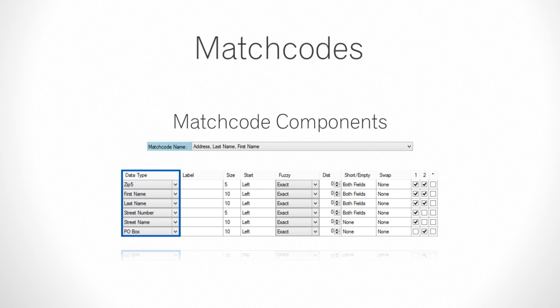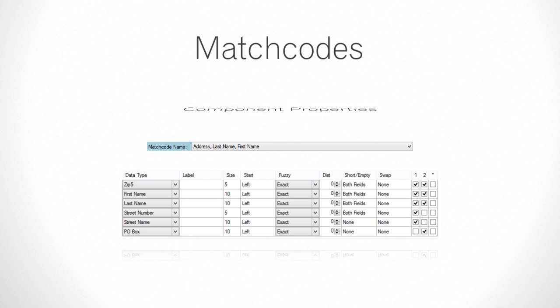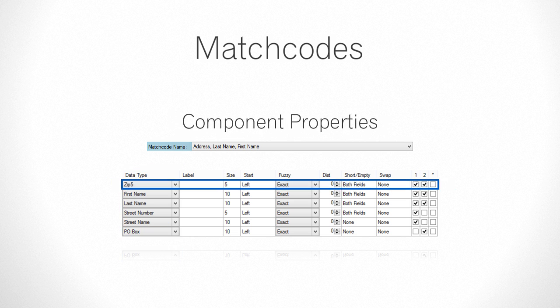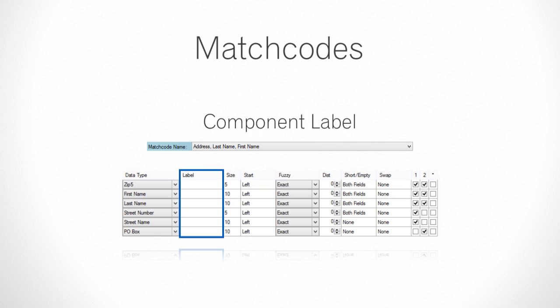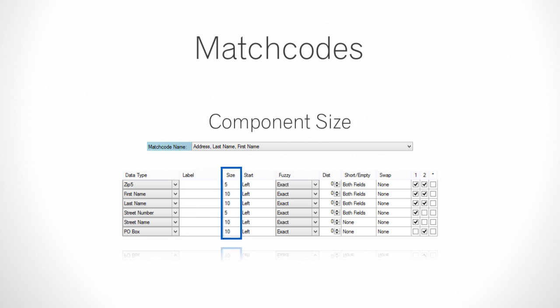Then we have the Match Code Components. The match code contains one or more of these components. These are the data types that will be evaluated to determine whether the records being compared are duplicates. Each component has properties which can be set individually, giving you added flexibility in how a particular component is used. Each component can be given a label which describes the data type. And Component Size dictates how many characters of the incoming data will be used in the comparison.